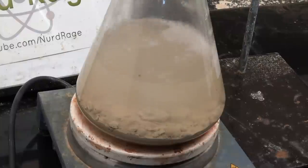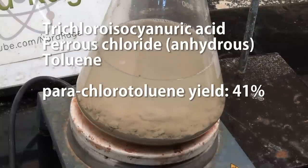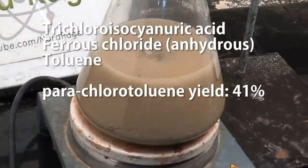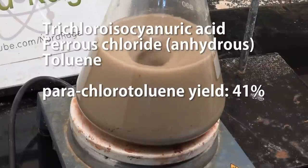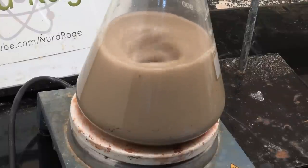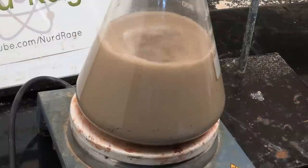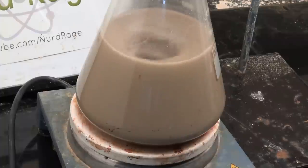The best method so far was the method of using ferrous chloride catalyst and directly adding the trichloroisocyanuric acid to the toluene mixture. This gave me a para-chlorotoluene percentage of 41%. After two months of work and a thousand dollars of wasted chemicals, broken glassware and NMR spectroscopy fees, I decided to stop here and just show the best and most straightforward methods in this video.